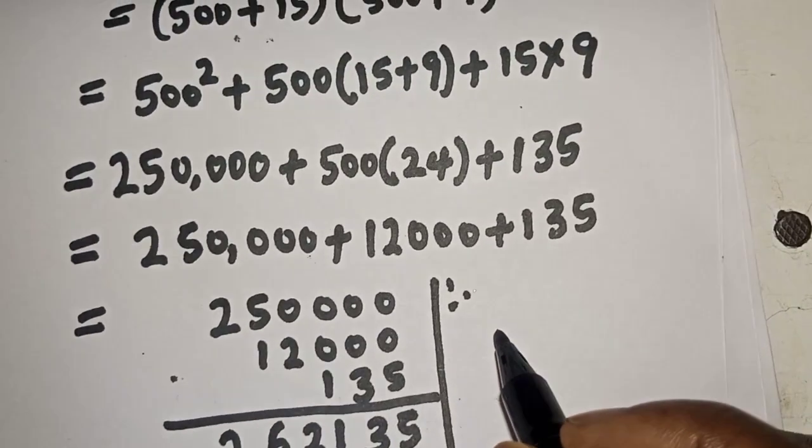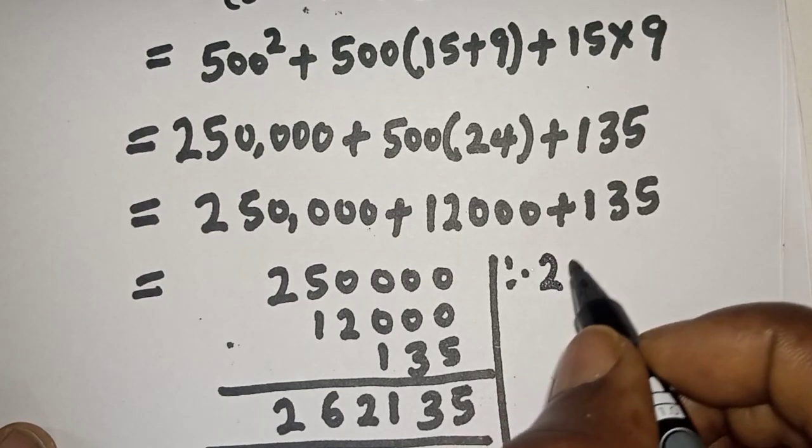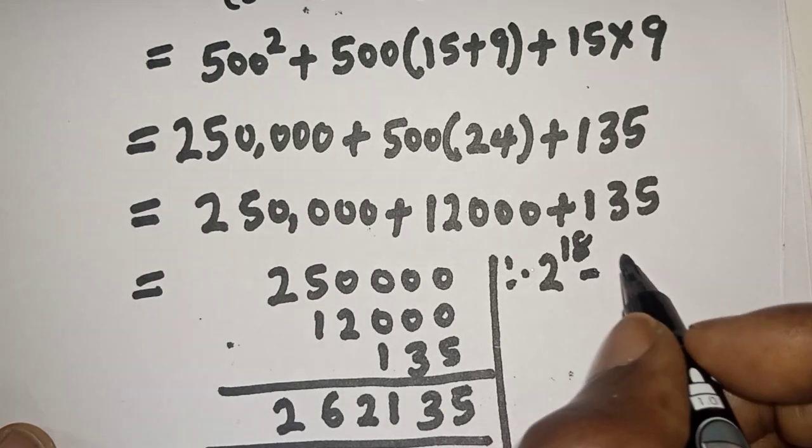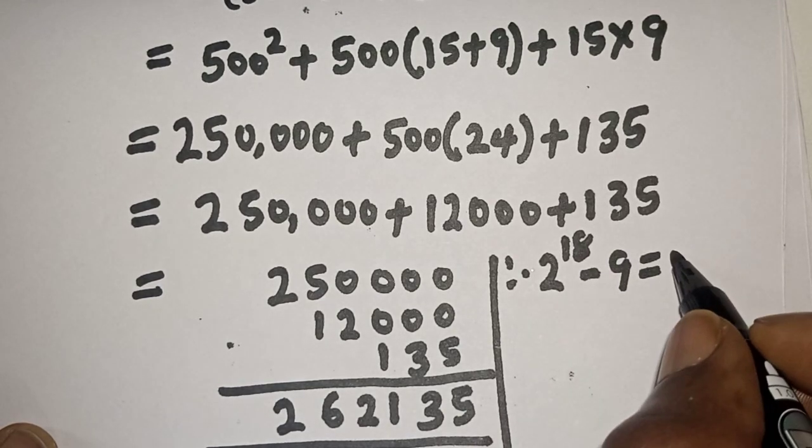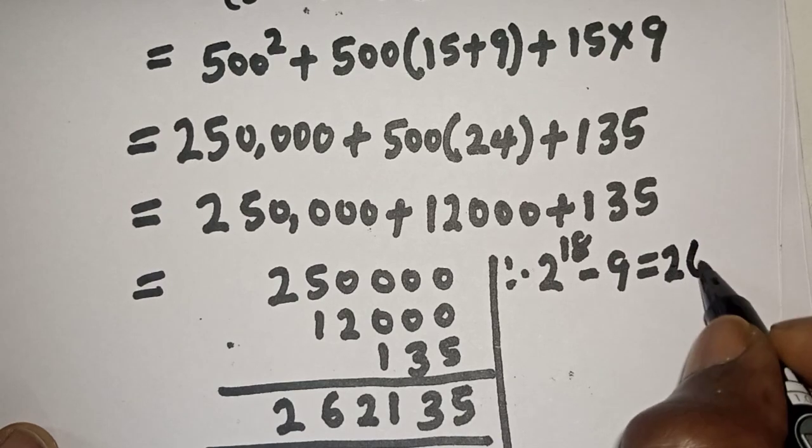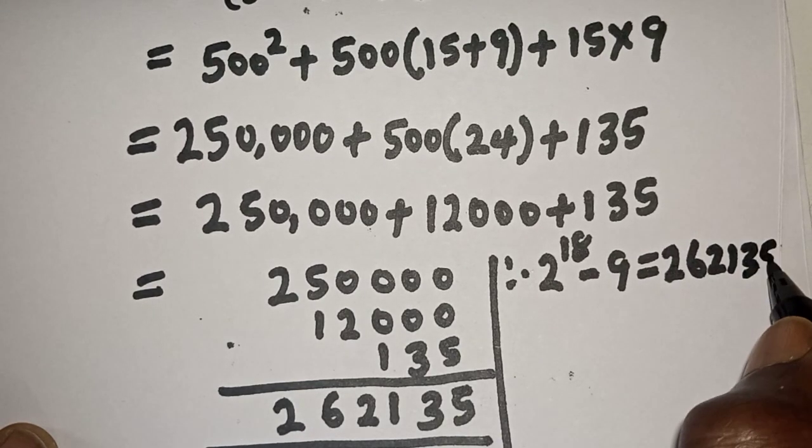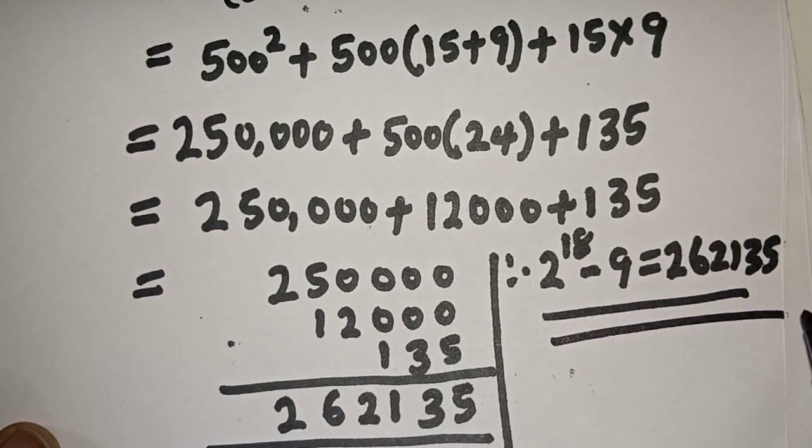And therefore, 2 raised to power 18 minus 9 is equal to 262,135. And this is the final answer.